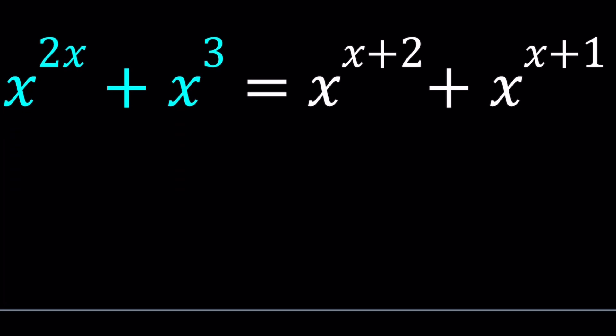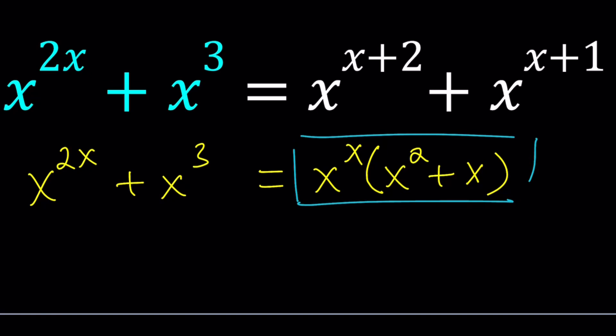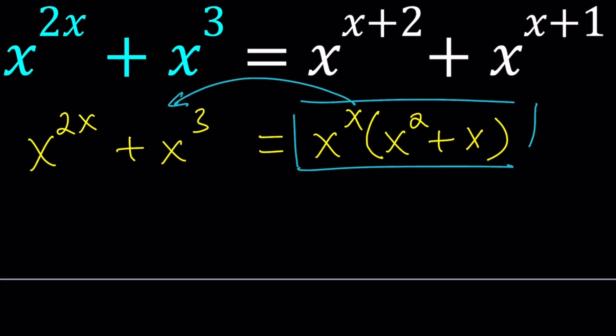Notice that we have x to the power 2x and x to the power x plus 2 and x to the power x plus 1. First of all, we can take out an x to the power x here. And that's going to give us x squared plus x. And then on the left-hand side, I'm going to bring these to the left-hand side by subtraction. And that's going to give me x to the power 2x minus x squared plus x. Let me go ahead and use a different color here.